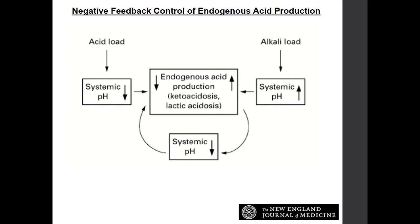There is a negative feedback control of endogenous acid production. An acid load or low pH results in endogenous acid production including ketoacidosis or lactic acidosis. This may be the DKA patient. Lactic acid may indicate a patient who is hypovolemic or in shock from an infectious source like sepsis. Patients who experience systemic alkalosis can also trigger this negative feedback mechanism, ultimately resulting in a low systemic pH.